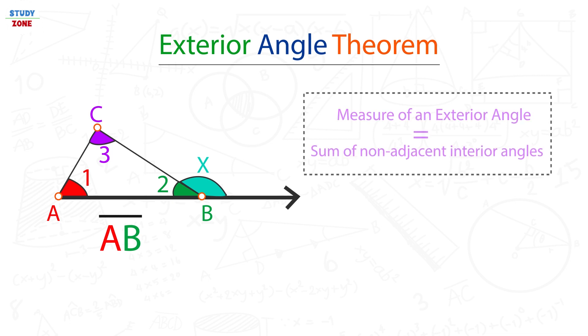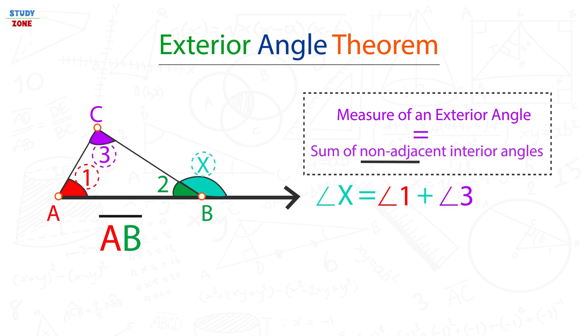Hence according to the exterior angle theorem, angle X should be equal to the sum of angle 1 and angle 3, the non-adjacent interior angles to angle X.